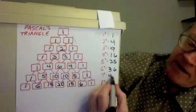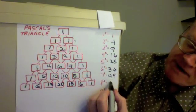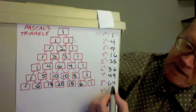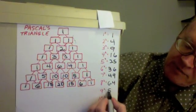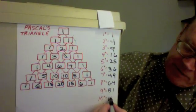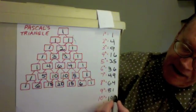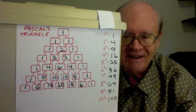Seven times seven is forty-nine, eight times eight is sixty-four, nine times nine is eighty-one, ten times ten is a hundred, and so on indefinitely.